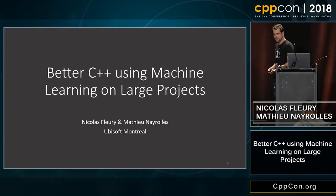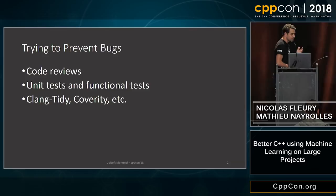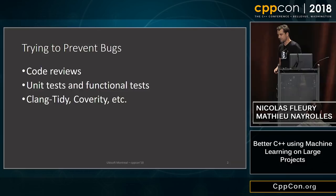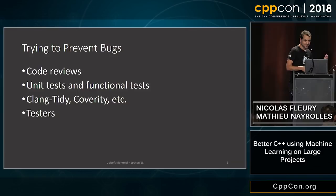We make code reviews, unit tests, and functional tests. We use static analyzers like Clang-tidy, Coverity, etc. But we still make bugs. So we have testers, but bugs still reach our consumers, so we make beta versions.